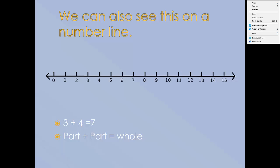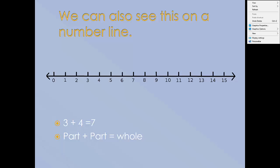We can do this on a number line too. The distance is always the same between any two numbers on the number line. So this number line shows us that three plus four adds up to seven. The three and the four are parts; the seven is the whole.